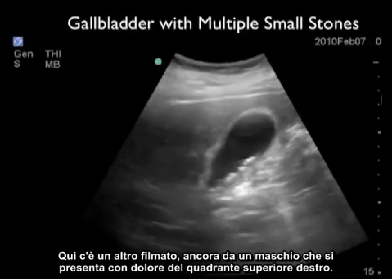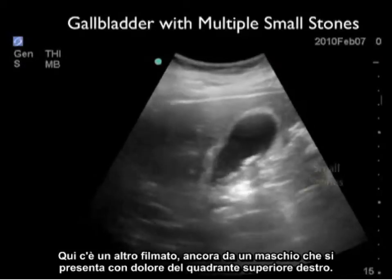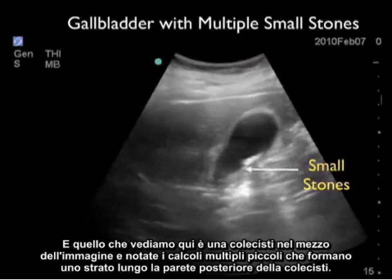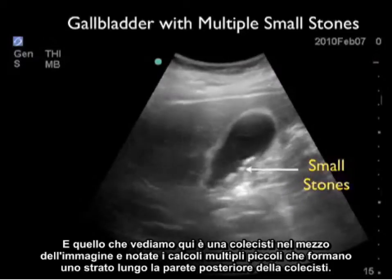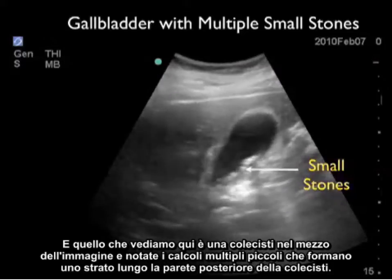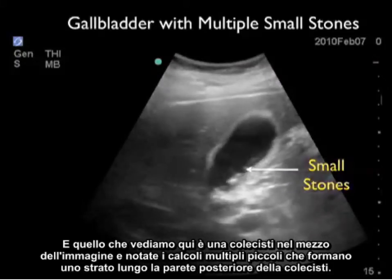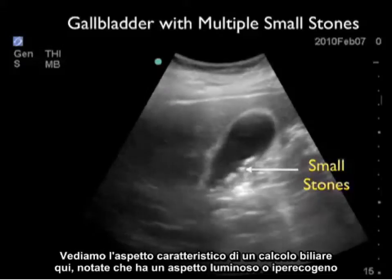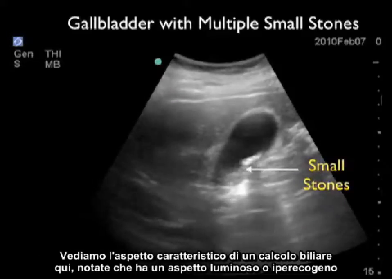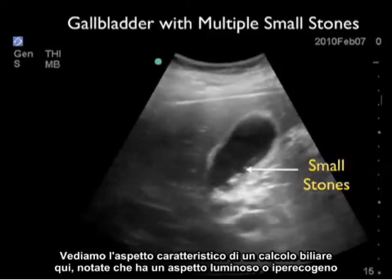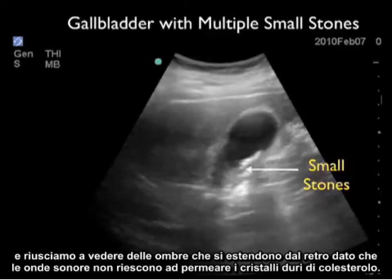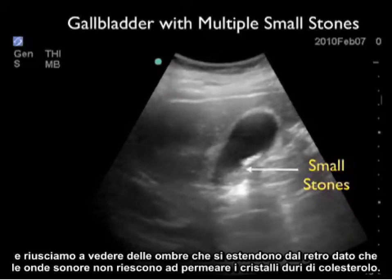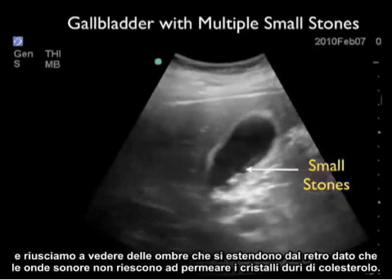Here's another video clip from a male presenting with right upper quadrant pain. We see the gallbladder in the middle of the image, and notice the layering of multiple small stones on the back wall of the gallbladder. We see the characteristic appearance of a gallstone: a hyperechoic or bright appearance, with shadows coming off the back as the sound waves cannot permeate the hard cholesterol crystals.